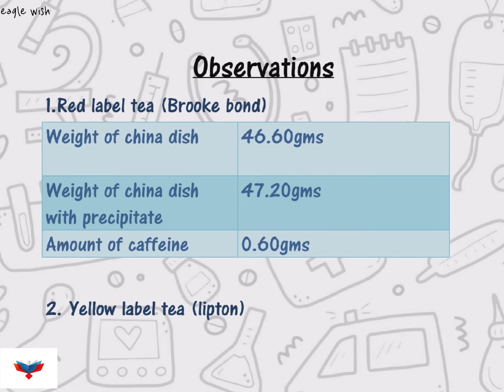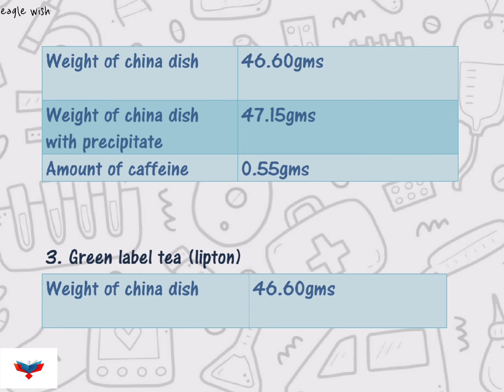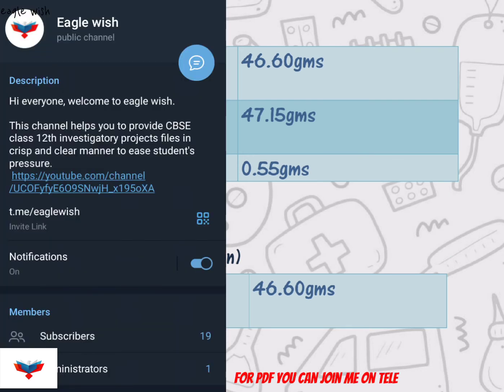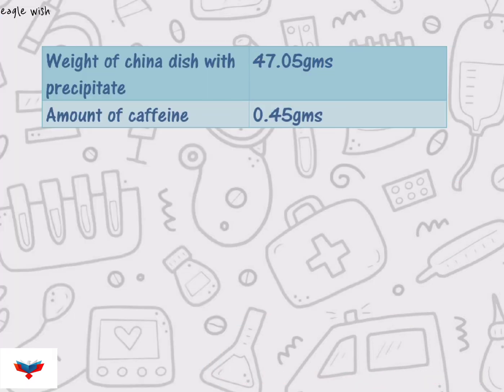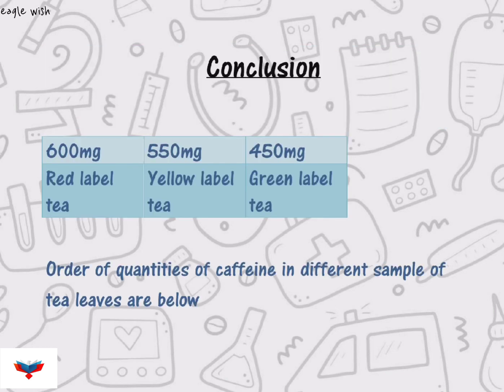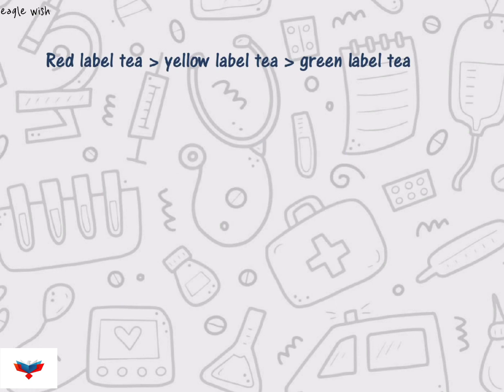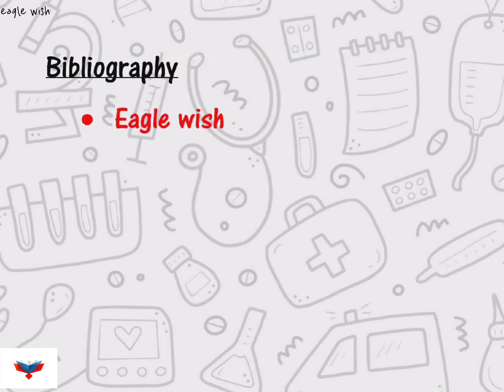Since it is a chemistry investigatory project, we have to mention observations and conclusions in the project. For the PDF, you can join me on Telegram at EagleWish. Don't forget to mention the bibliography at the end of the project.